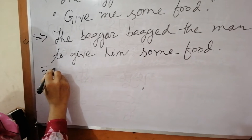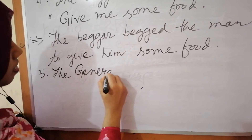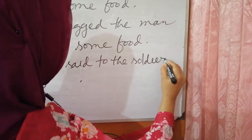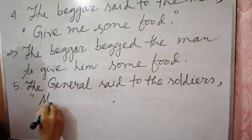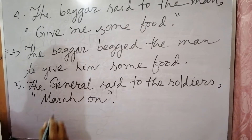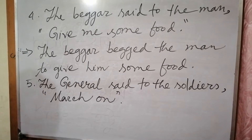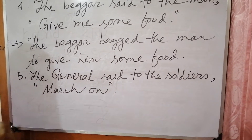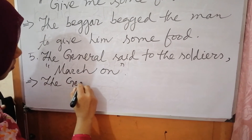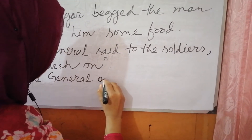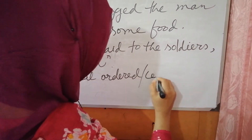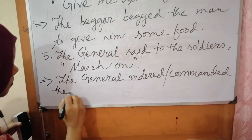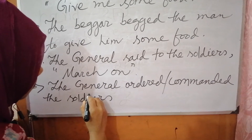Number five: 'The general said to the soldiers, march on.' The reported speech expresses a command or order of the general. So we can use 'order' or 'command' to replace the reporting verb. In writing: 'The general ordered or commanded the soldiers to march on.'